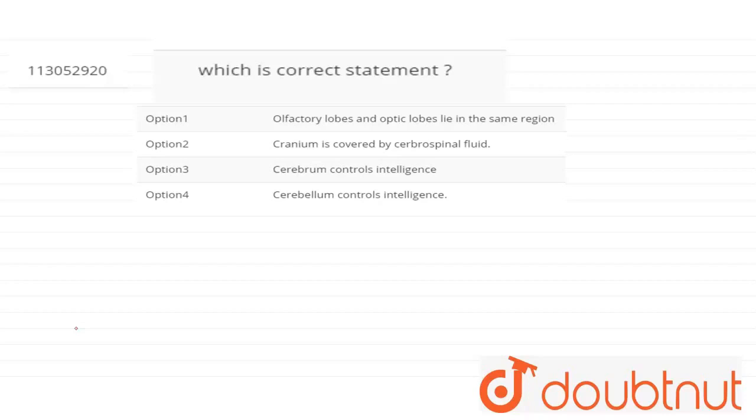Option number 2: cranium is covered by cerebrospinal fluid. Option number 3: cerebrum controls intelligence. And option number 4: cerebellum controls intelligence.